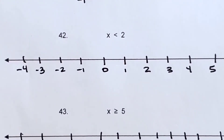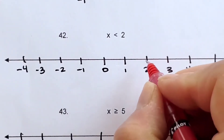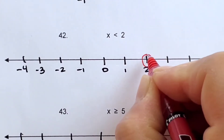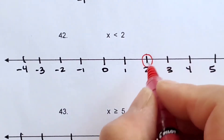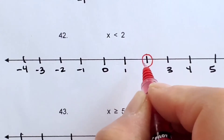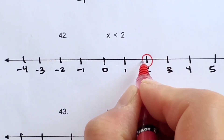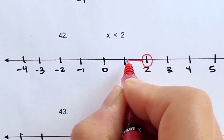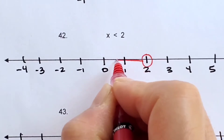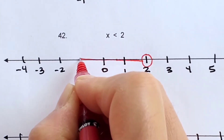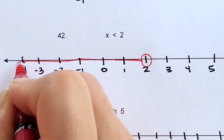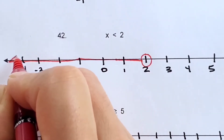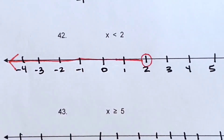Number 42: x is less than 2. It doesn't equal 2, so you're going to have an open point. It's everything less than 2, so your line will go to the left with an arrow.